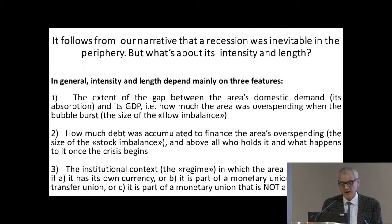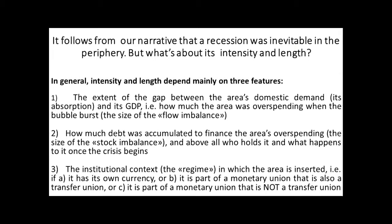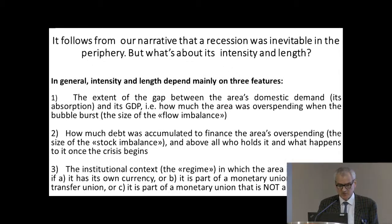From our narrative, it follows that recession was inevitable in the periphery. But what about its intensity and length? We think this depended mainly on three features: first, the size of the imbalances — both flow and stock imbalances — that were really unprecedented. Greece, for instance, had around a 70% current account deficit at the moment of the crisis; Spain was above 10%, without even mentioning the external debt that had accumulated.